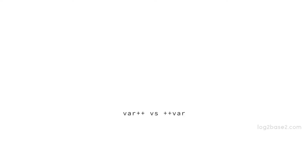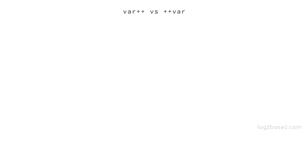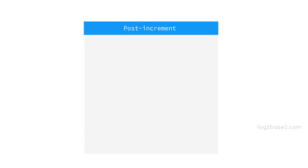We can use these increment or decrement operators in two ways: as var plus plus and plus plus var. First, let us see the post-increment operation. Here, the value is returned first and then only incremented. See this expression: we have b equal to a plus plus. Here, first the value of a will be returned, and then only a is incremented.